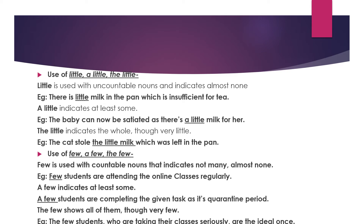Use of 'little,' 'a little,' and 'the little': 'little' is used with uncountable nouns and indicates almost none. For example, 'There is little milk in the pan, which is insufficient for tea.' 'A little' indicates at least some: 'The baby can now be satiated as there is a little milk for her.' 'The little' indicates the whole, though very little: 'The cat stole the little milk which was left in the pan.'